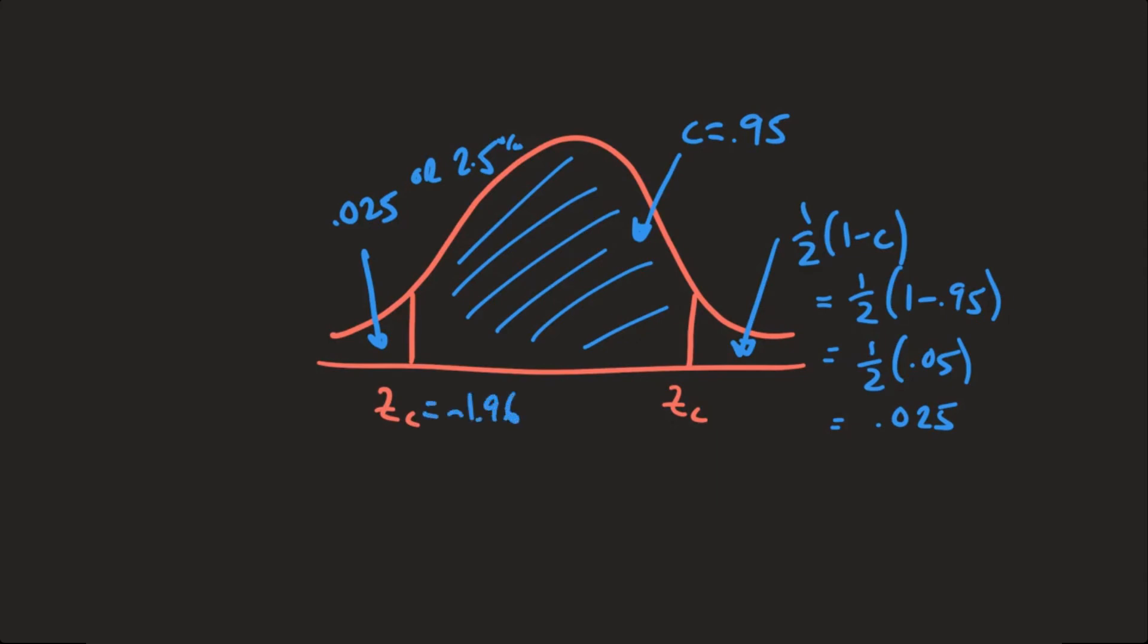Which makes the positive z value 1.96. Now let's try one more. Let's say you're given a confidence of 0.98. So draw the normal curve, add your two z values, mark 0.98 in the center, which will give you 0.01 here and 0.01, right? Because now you can see if you add up these three areas, it adds up to 1 or 100 percent.